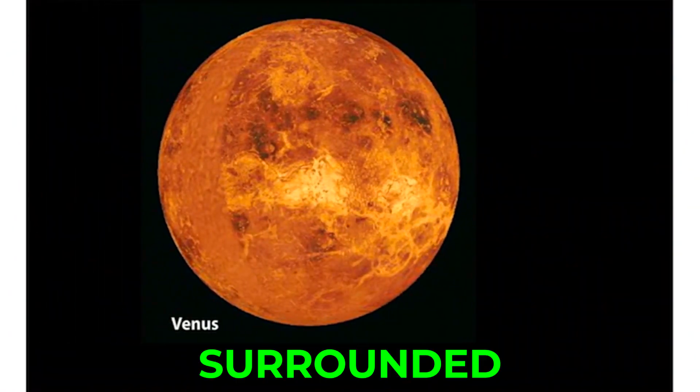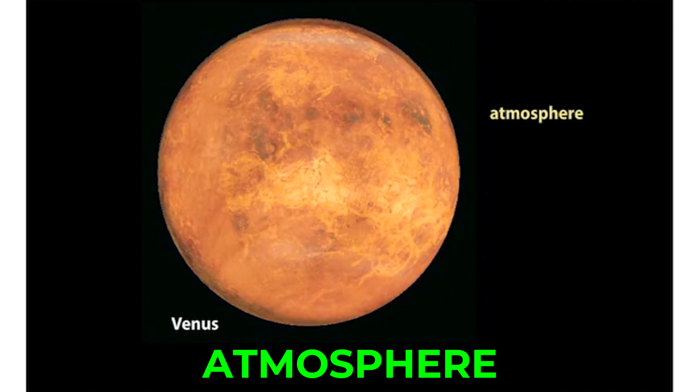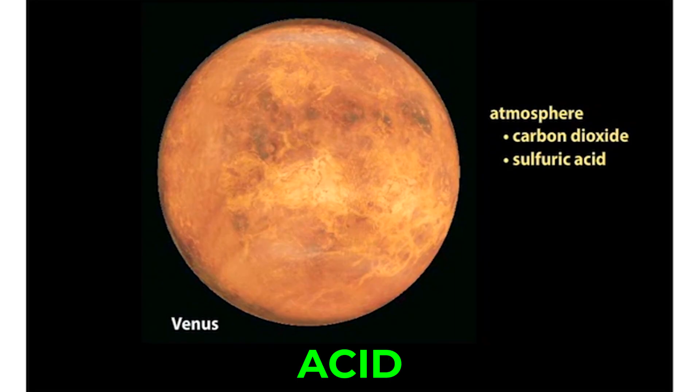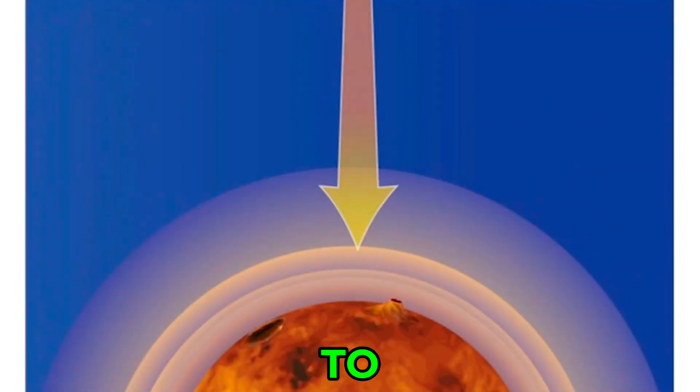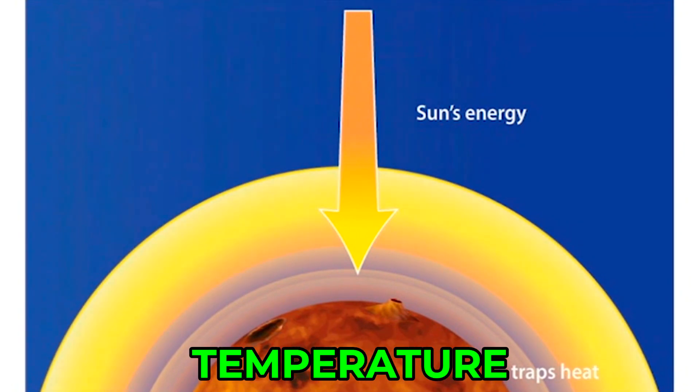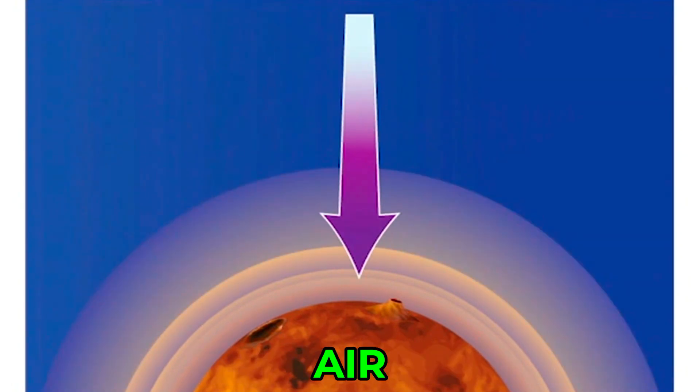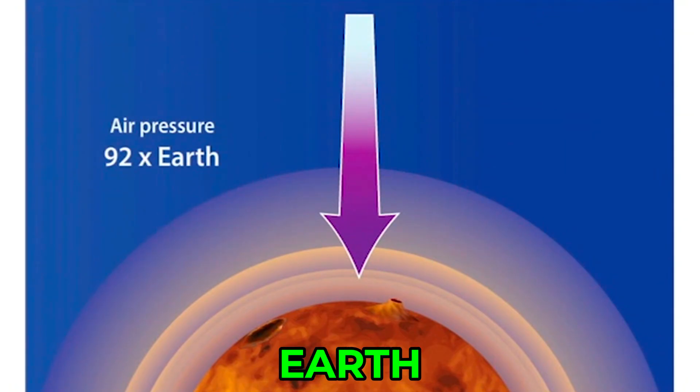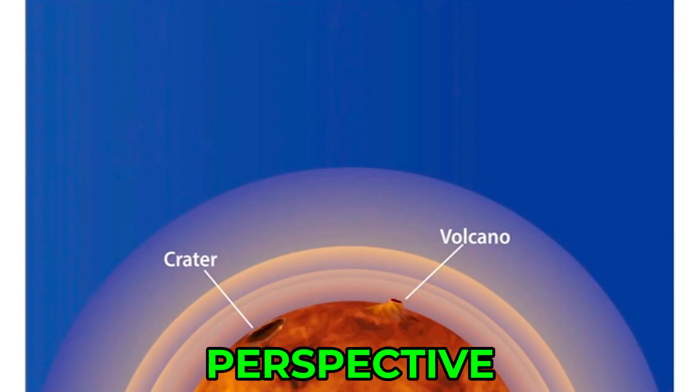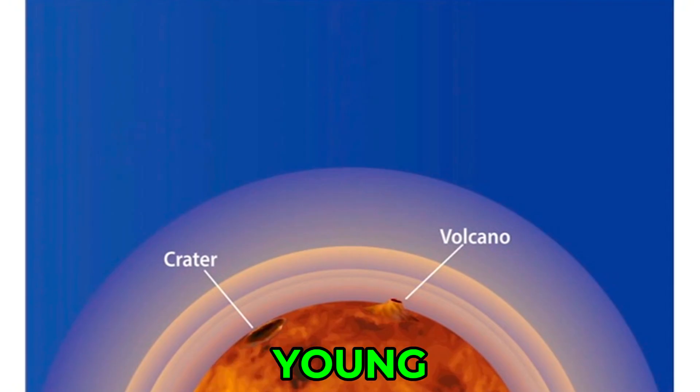Venus is surrounded by a very dense atmosphere composed of carbon dioxide and sulfuric acid clouds. Due to the greenhouse effect, Venus has the hottest surface temperature of any planet. The air pressure on Venus is 92 times that on Earth. Craters and active volcanoes cover the surface of the planet. From a geologic perspective, Venus is considered a young planet.